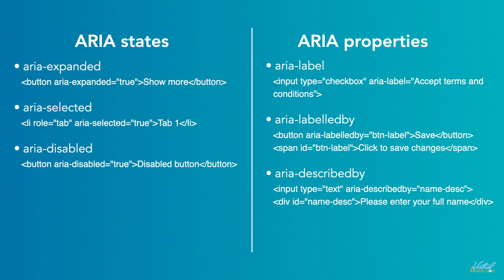These examples demonstrate the usage of ARIA states and properties to enhance accessibility by providing dynamic information about an element's state or static information about its characteristics. Remember to choose and apply these attributes appropriately based on the specific context and requirements of your web content.